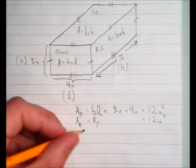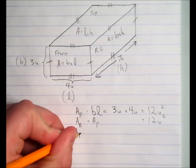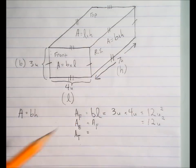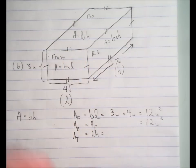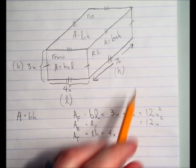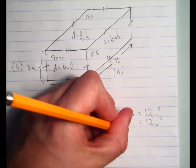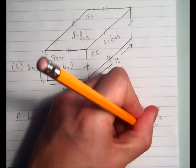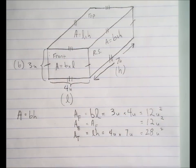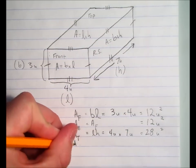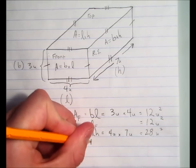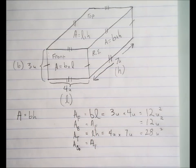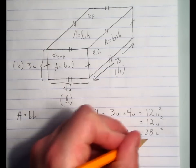The area of the top equals length times height, which is four units times seven units, giving us twenty-eight square units. The area of the bottom is equal to the area of the top, so it also equals twenty-eight units squared.